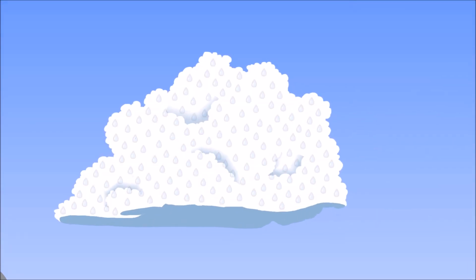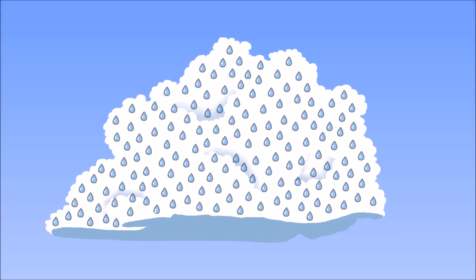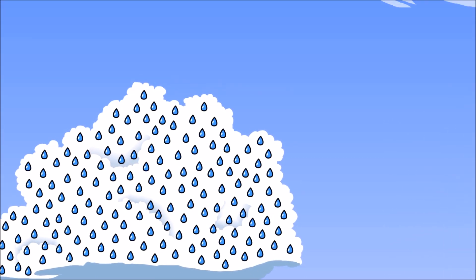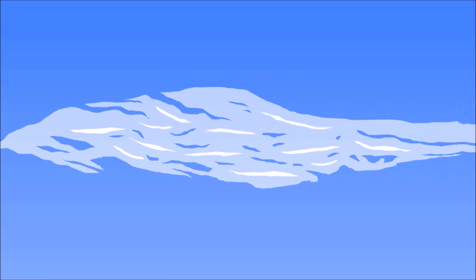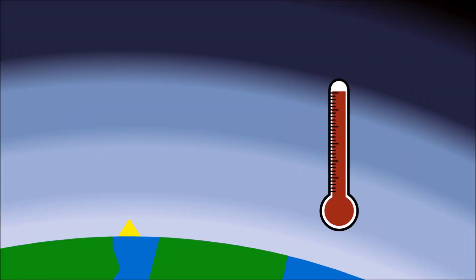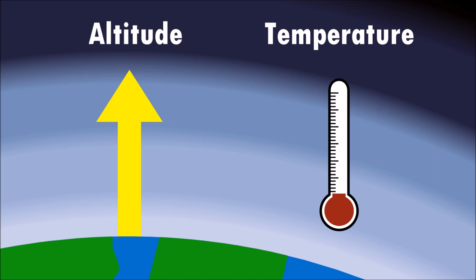Clouds are made up of lots of minuscule water droplets, and sometimes clouds are even made up of tiny ice crystals. As you go up in the sky, the temperature gets colder! Temperature and altitude affect the shape of clouds.